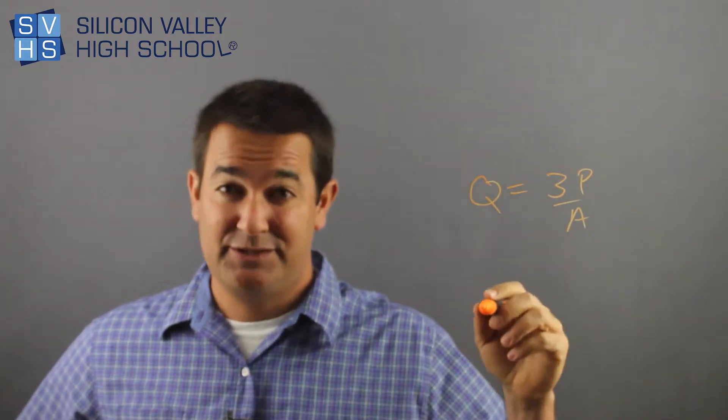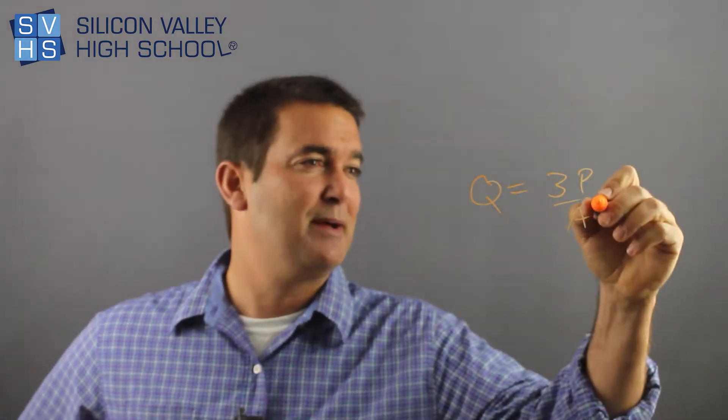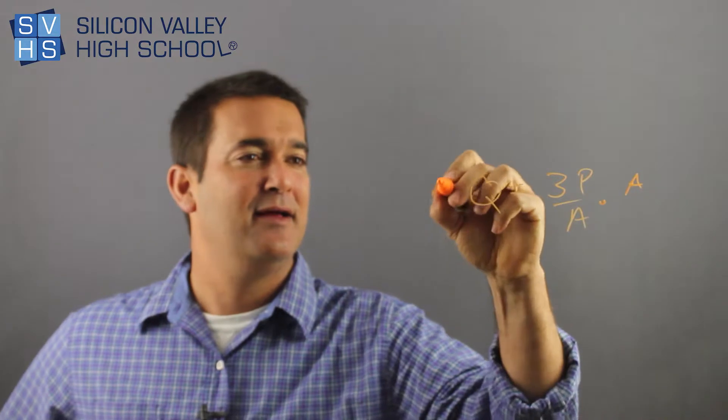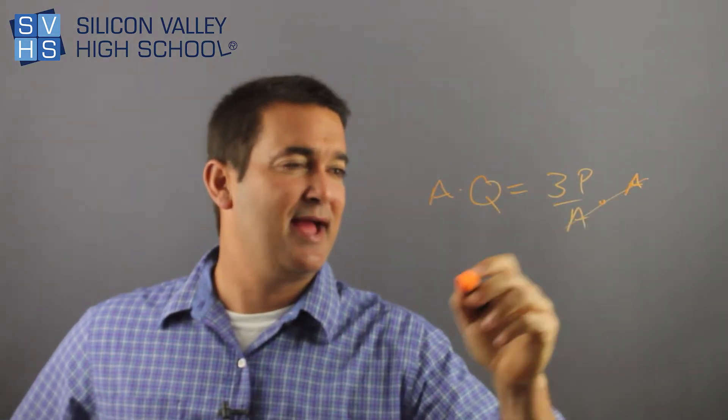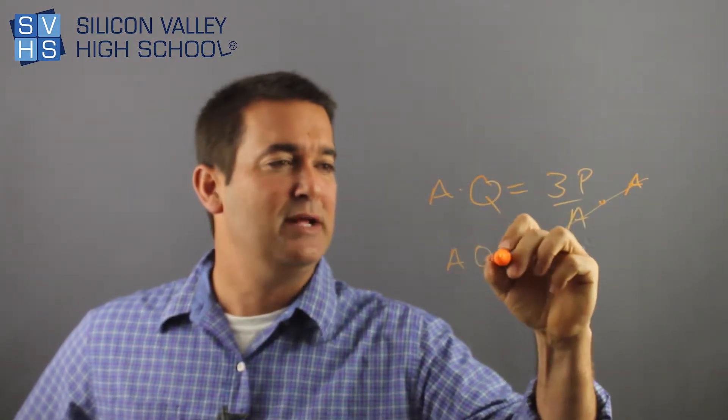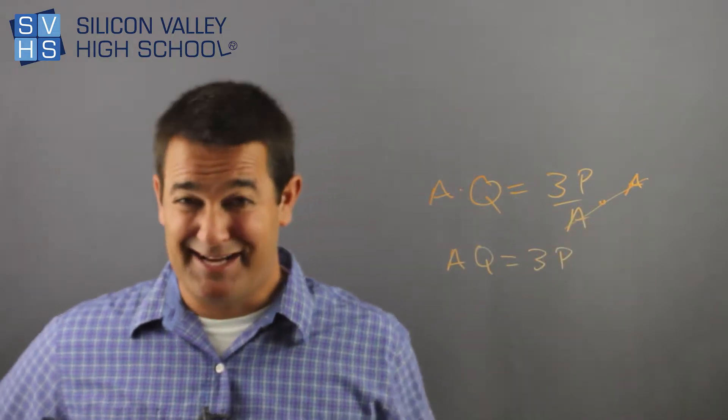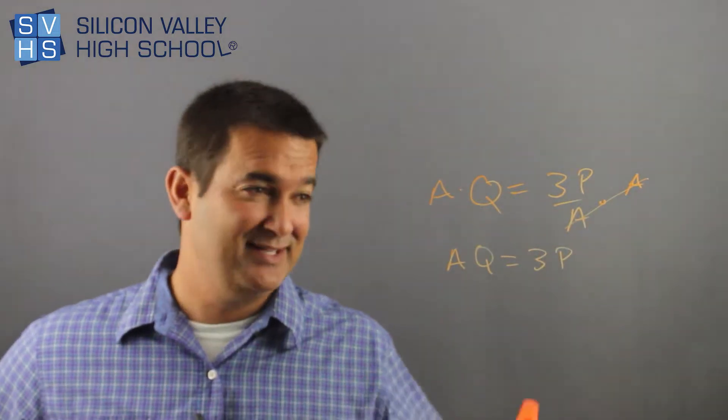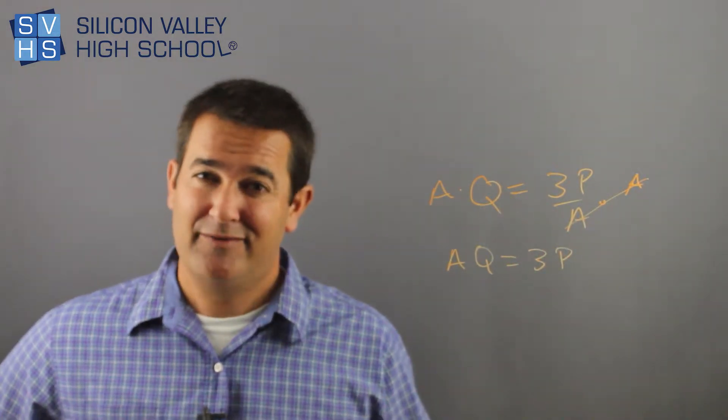So the way to get A to the top is do something to both sides. I would multiply both sides by A, right? And that would cancel my A here, and then I have AQ equals 3P. I'm not done. A isn't alone, but at least it's not a nightmare in the bottom of some fraction.